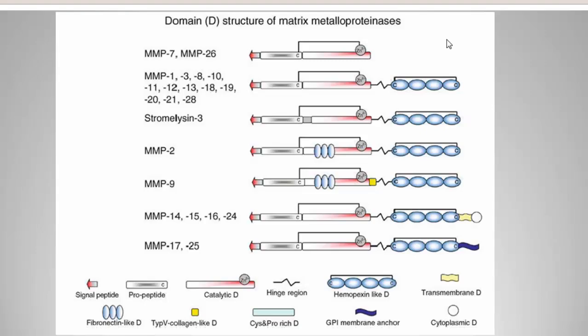Matrix metalloproteinases are very specific — they may have specific substrates for their activity. But still, they can overlap among each other's substrates within their family. Collectively, all together they can cleave collagen, fibronectins, and many other ECM proteins.